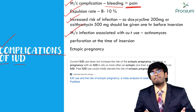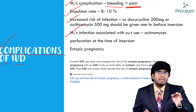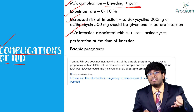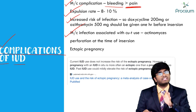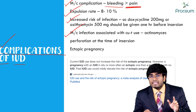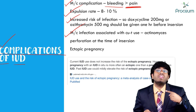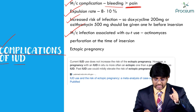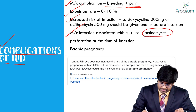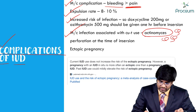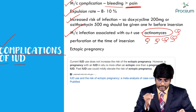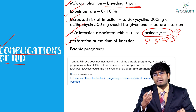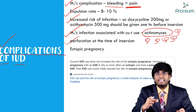Before inserting the intrauterine contraceptive device, the patient is given doxycycline and azithromycin one hour before insertion to prevent PID. However, if asked what is the most common infection seen with IUD use, the answer is not chlamydia — it is Actinomyces. Actinomyces infections are the most common infections associated with copper T use.